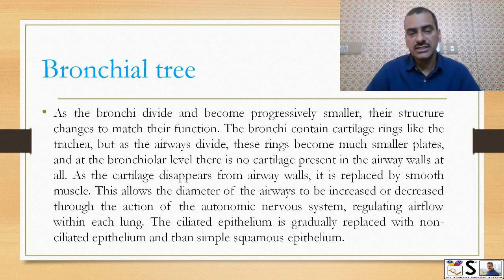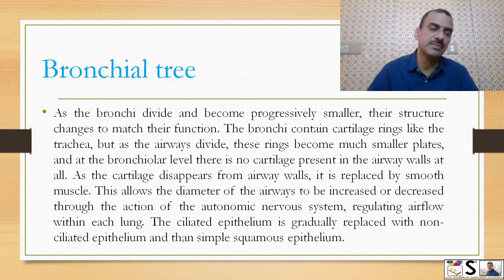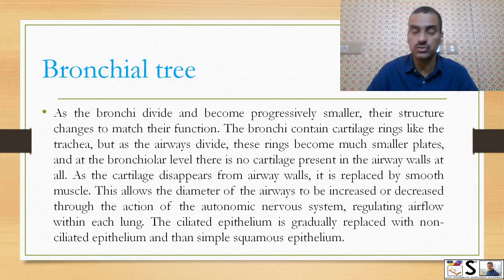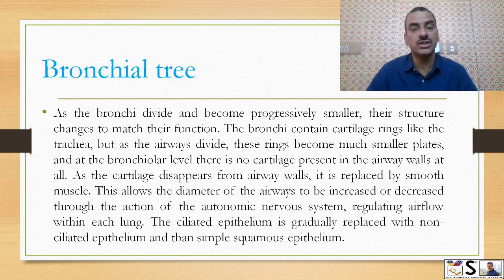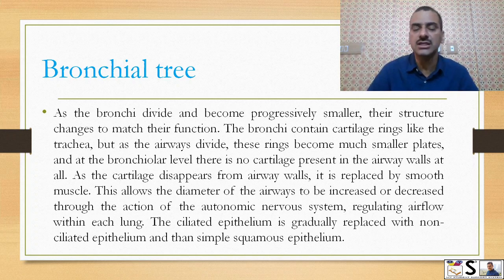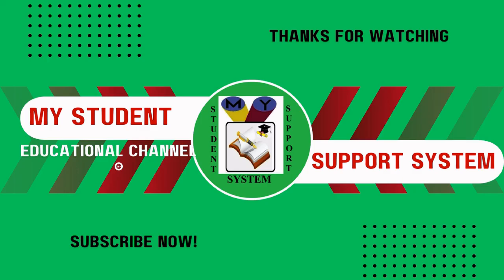As the cartilage disappears from the airway walls, it is replaced by smooth muscle. This allows the diameter of the airways to be increased or decreased through the action of the autonomic nervous system, regulating airflow within each lung. The ciliated epithelium is gradually replaced by non-ciliated epithelium, and finally by simple squamous epithelium.